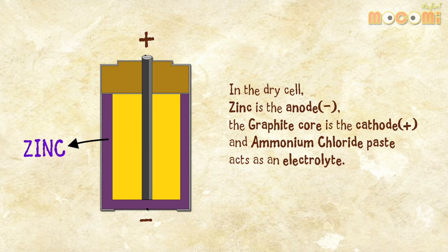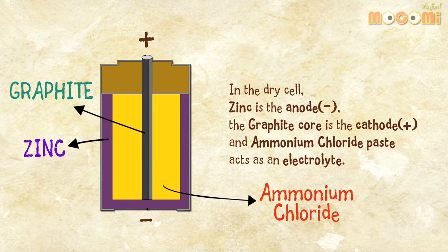In the dry cell, zinc is the anode, the graphite core is the cathode, and ammonium chloride paste acts as the electrolyte.